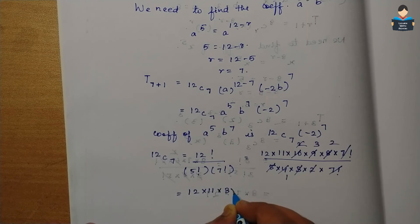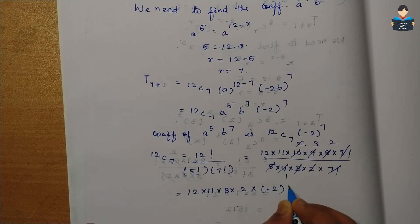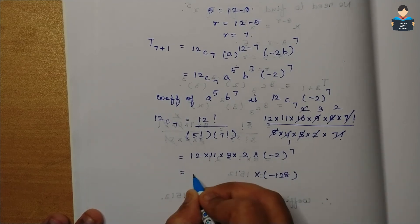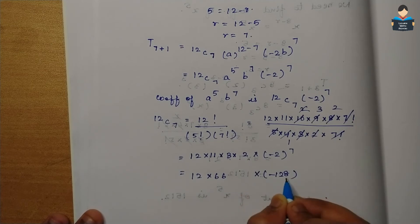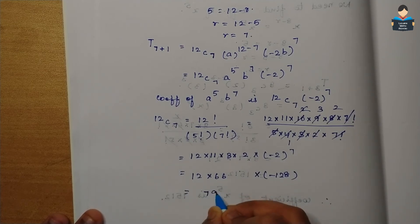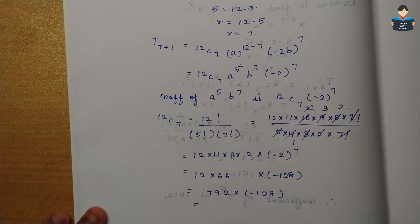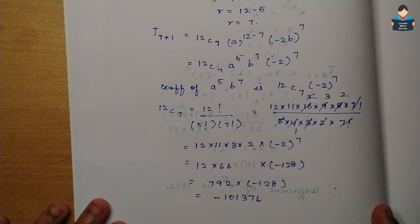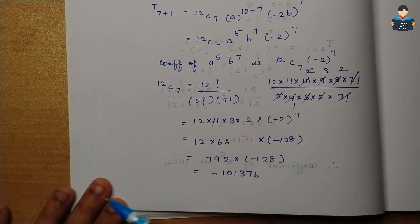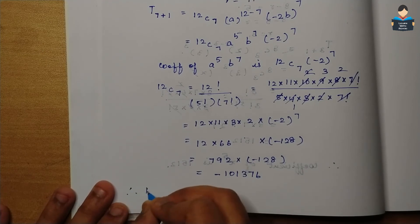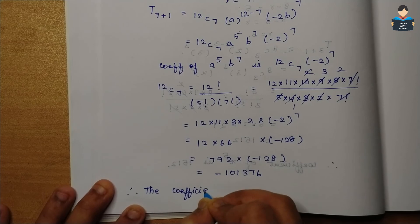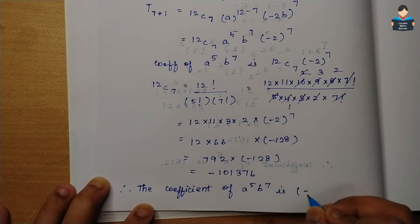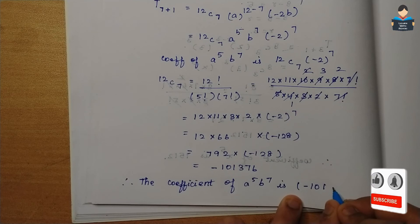And (−2) to the power 7 equals −128. So the coefficient equals 792 × (−128) = −101376. Therefore the coefficient of a⁵b⁷ in (a − 2b)¹² is −101376.